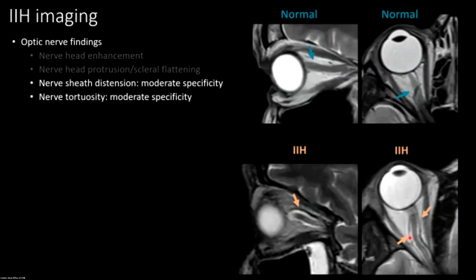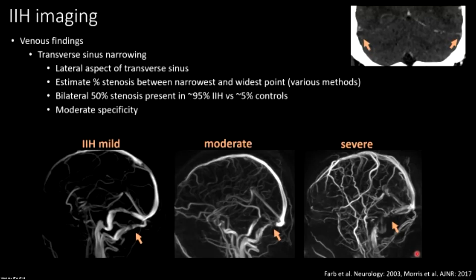Tortuosity is mostly described on sagittal but visible on axial too. Measurements have been published but I don't use them in routine practice. The main pitfall is making a ratio — it looks like the sheath is too big for the nerve, but what if the nerve is too small for the sheath? There are heritable forms of optic atrophy, septo-optic dysplasia giving small nerves, and prior bouts of optic neuritis — all causing the nerve to shrink while the sheath stays the same.